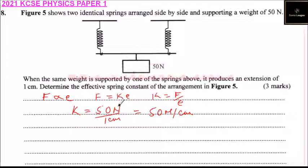So with that, we can get for the two springs—we can say k effective equals 2 multiplied by 50, and that will give us 100 newtons per centimeter, which is also equal to 10,000 newtons per meter.